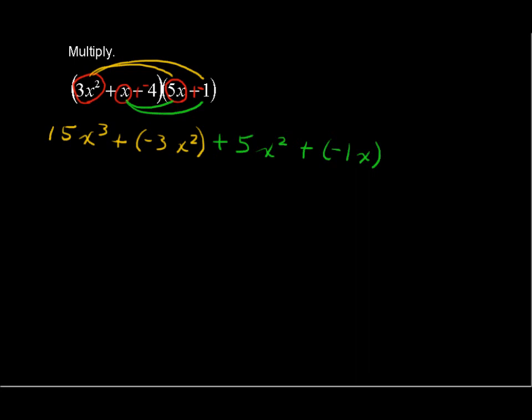Then let's multiply negative 4 by every term in the next polynomial. Negative 4 times 5x and negative 4 times negative 1. Negative 4 times 5x gives you negative 20x, and negative 4 times negative 1 gives you positive 4.